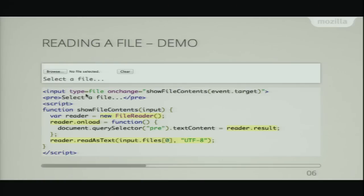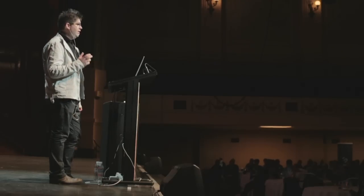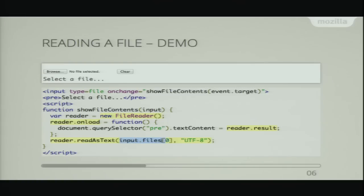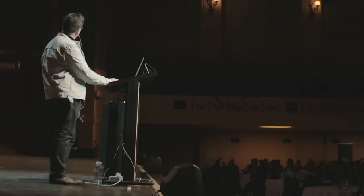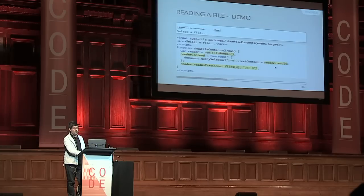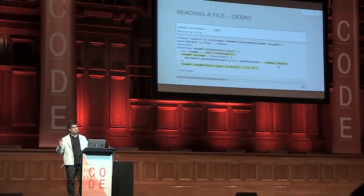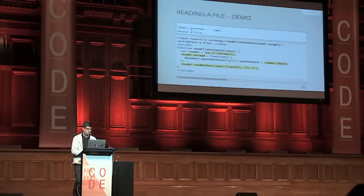Here's the showFileContents function. First we create the new FileReader object, then assign a load listener to it that will do something with the file once it's been read. The method we're calling to read the contents is readAsText, which interprets the contents as a plain text file. The first argument is the file object we're reading from, and the second argument is the encoding. Inside the onload event listener, we grab reader.result — the whole contents of the file as a string — and assign that into an element to show it on the screen.